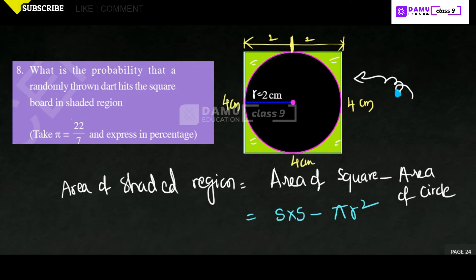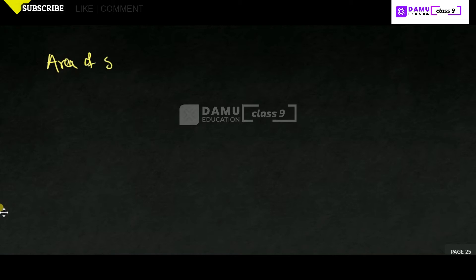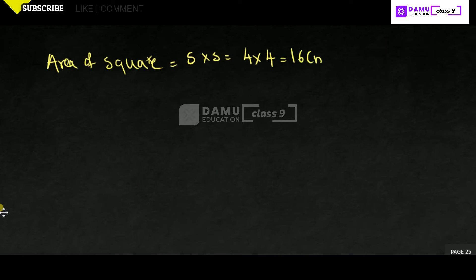We are going to find the area of the square. Area of square will be equal to side into side, that is 4 into 4, which equals 16 cm squared.